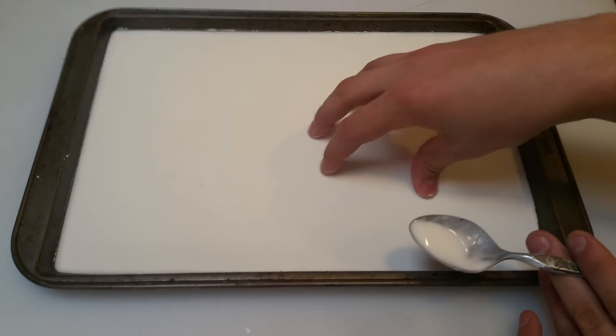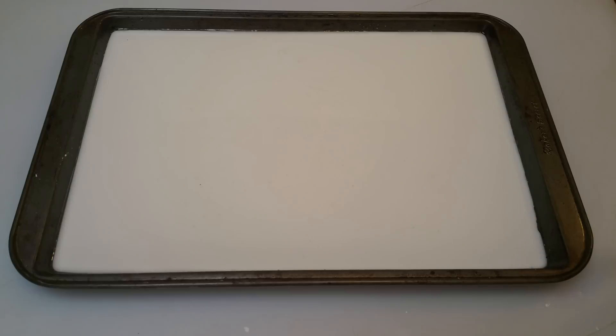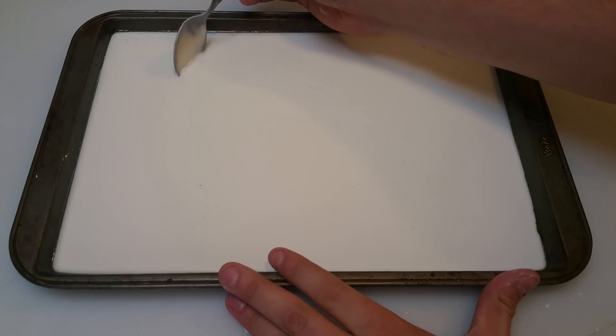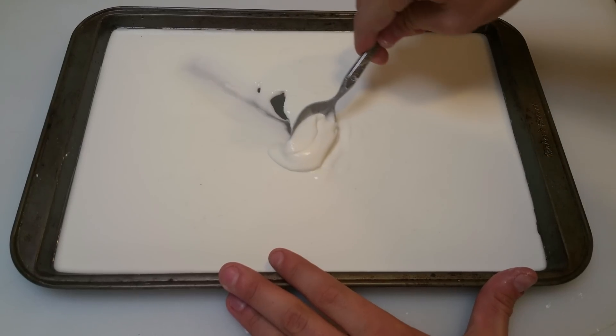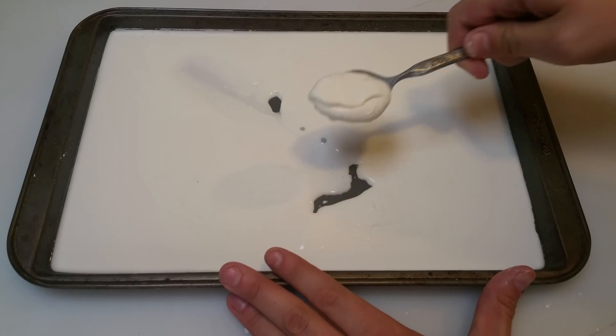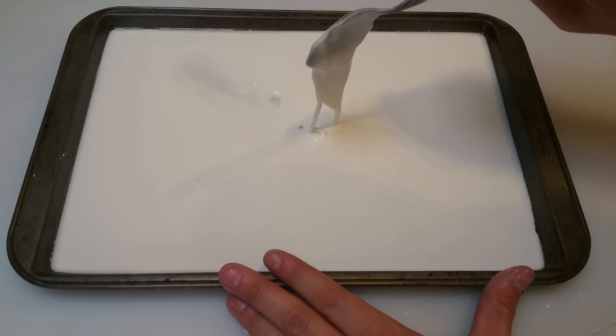This mixture is called a non-Newtonian fluid and doesn't behave like normal fluid. So what you can do is you can actually take it and scrape it. You can actually see it starting to look more like a solid as I do that. Whenever you put pressure on it, it becomes more like a solid. When you let it act as it normally is, it turns into a liquid.